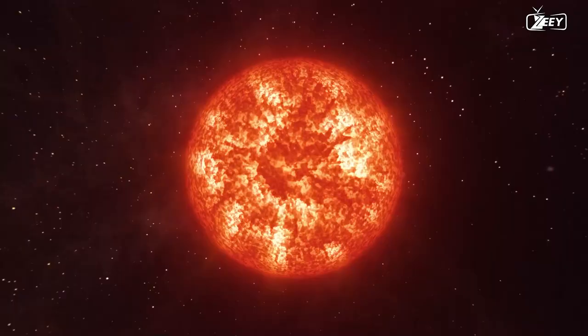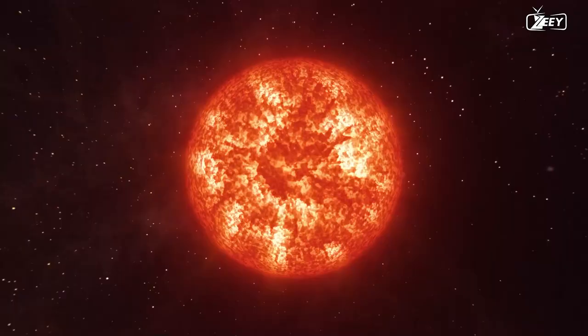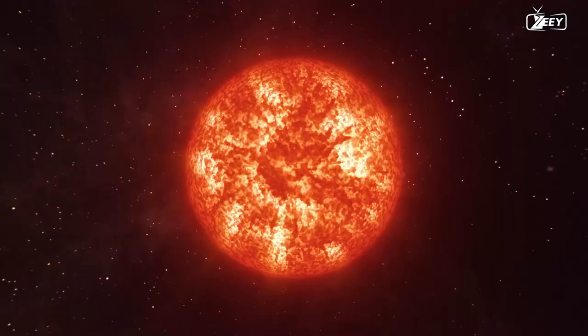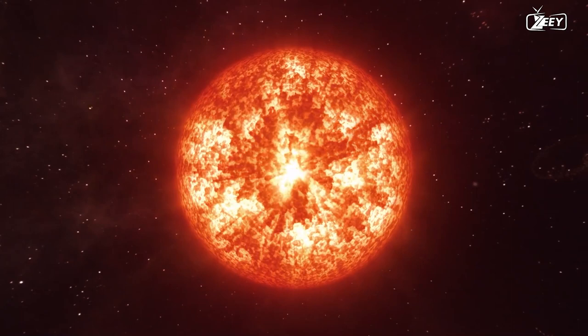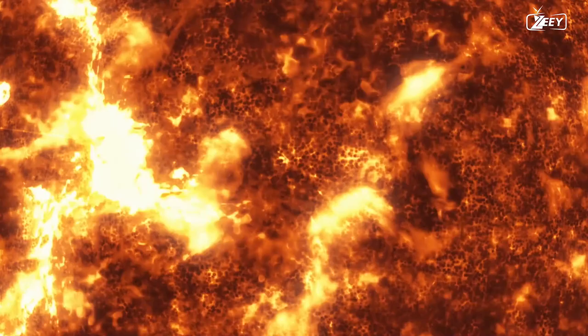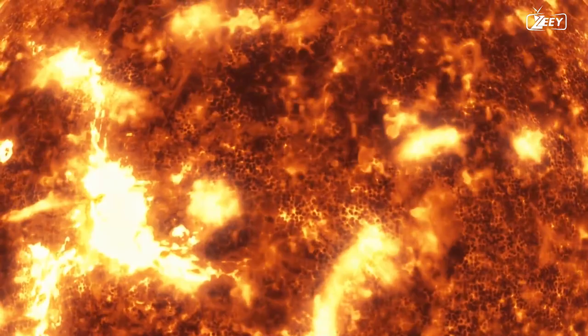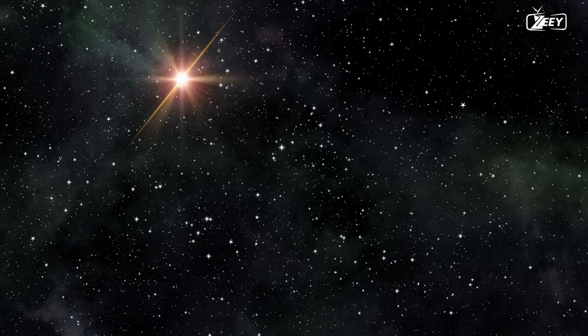The star is roughly half the magnitude of the sun and has a surface temperature of approximately 3,500 degrees Celsius, as opposed to the sun's 5,500 degrees Celsius. Despite its diminutive size, Glee 710 is a relatively active star, exhibiting regular outbursts and surface eruptions.